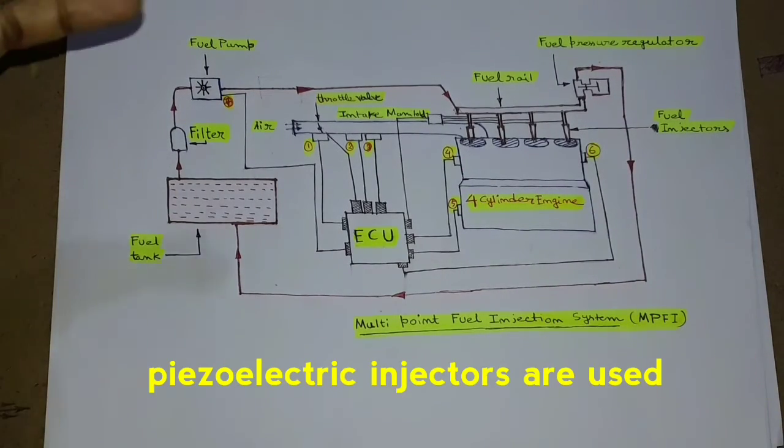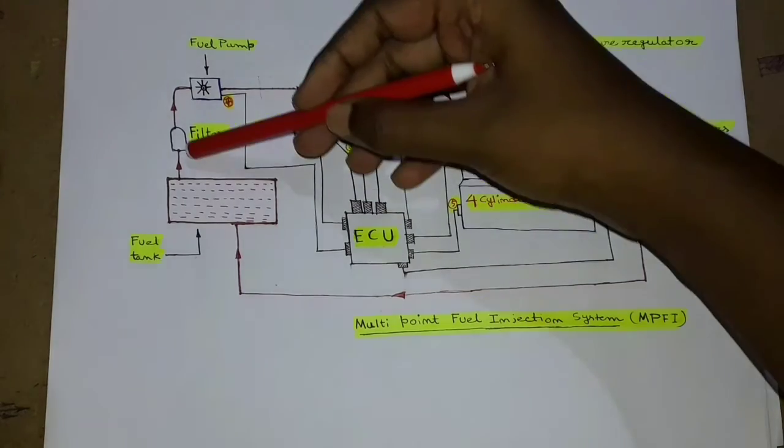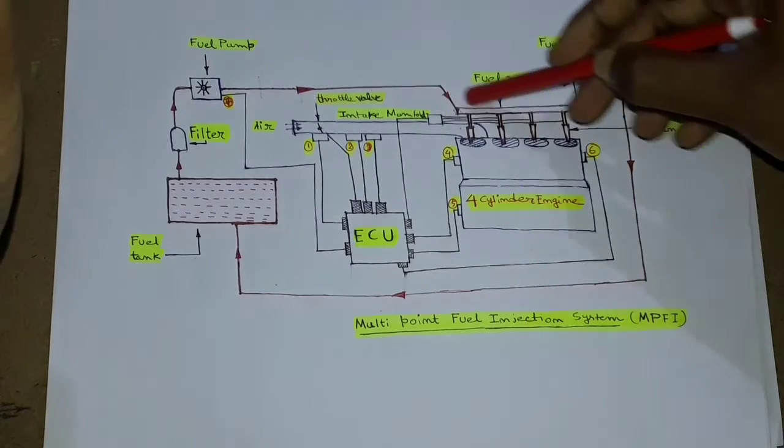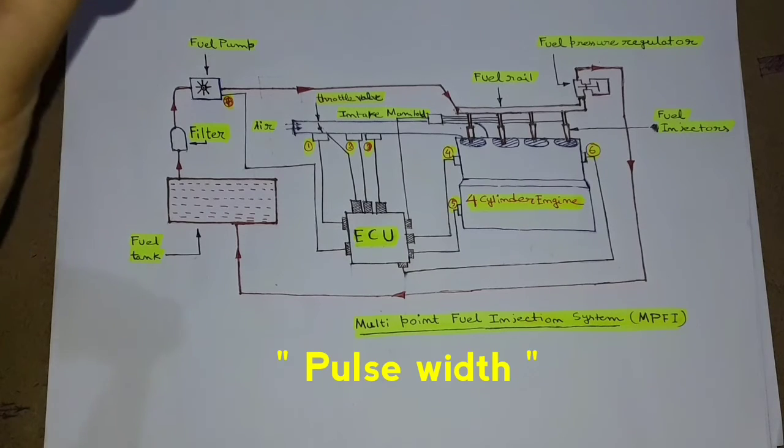Fuel is injected by electrically controlled injectors which is supplied with petrol under high pressure by the fuel rail. Fuel pump sucks the petrol from the fuel tank through the fuel filter and then sends it to the fuel rail. The amount of time the injector stays open determines the amount of fuel supplied to the engine.